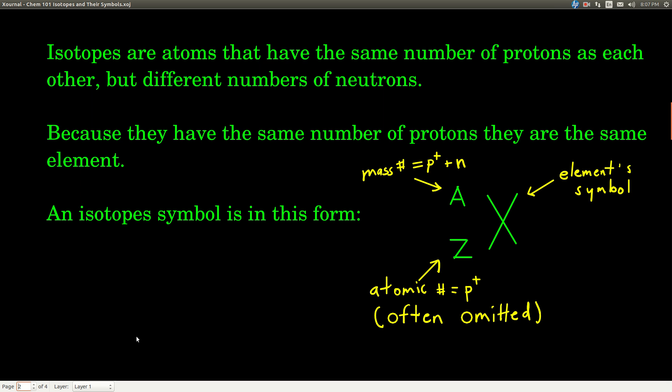What determines what element any given atom is is how many protons there are. Because we can have two atoms that have the same number of protons but different numbers of neutrons, they can be the same element but have slightly different masses.